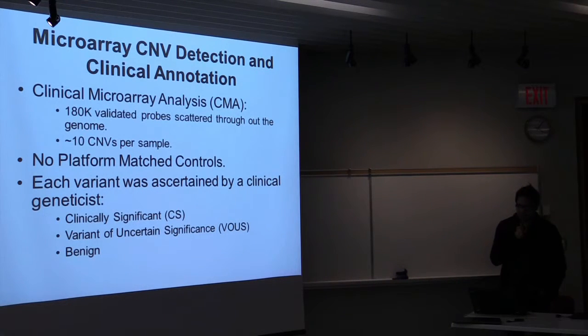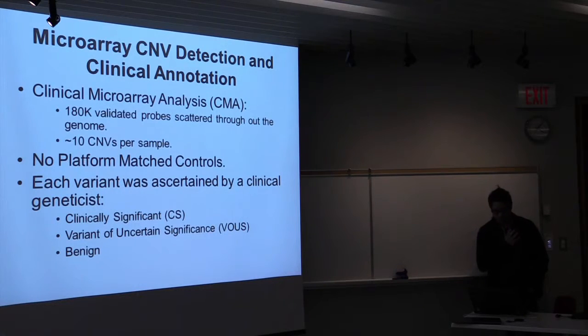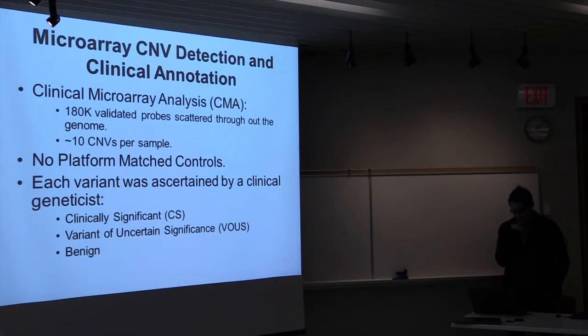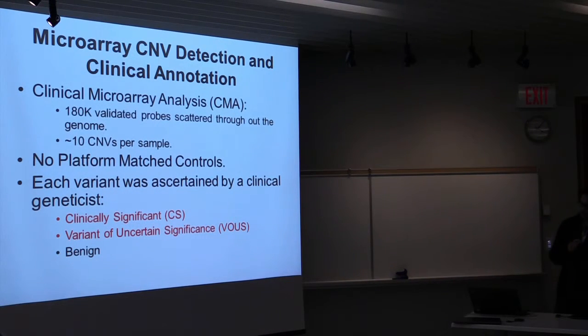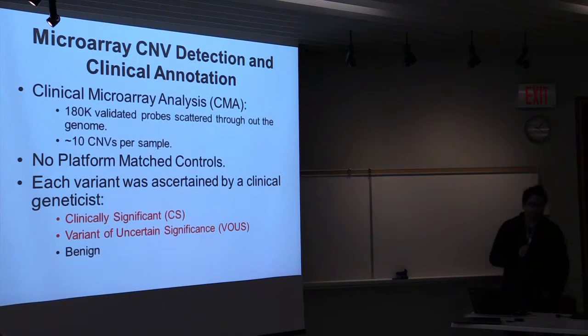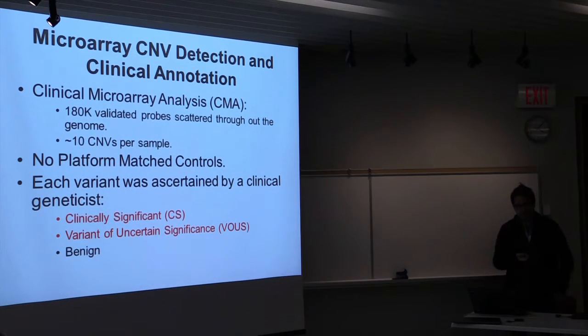Usually because it's performed in a clinical setting, we don't usually have platform-matched controls, so it's just case data. What the clinician does is, for each patient, they look at the 10 CNVs and ascertain whether the CNVs are clinically significant, or some variant of uncertain significance because there's lack of evidence of what the gene does, or if the variants are common in population. The problem with the clinically significant and VUS variants is we don't know what are the genes that are associated with the developmental delay. These variants tend to have like 30, 40 genes, and we don't know which genes may be associated with the condition.